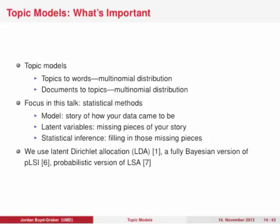To recap, topic models are a way to uncover the structure of large document datasets. There are two important components: two multinomial distributions that explain what topics are associated with which words, and which documents are associated with which topics. The model we've described is called latent Dirichlet allocation (LDA), which is a fully Bayesian version of probabilistic latent semantic indexing, which is itself a probabilistic version of latent semantic analysis.